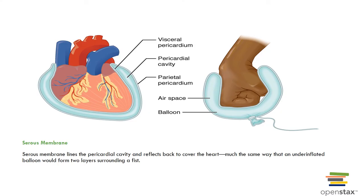Serous membranes consist of a visceral layer closer to the organ and a parietal layer lining the body wall. An example is the heart, where the parietal pericardium lines the pericardial cavity and the visceral pericardium covers the heart. Between the visceral and parietal layers is the lubricating serous fluid.